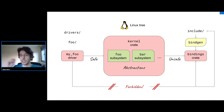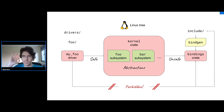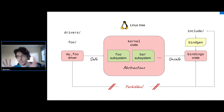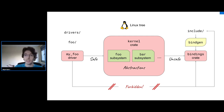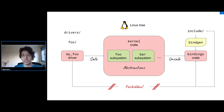Yes, bindgen works for most things for us. There are some cases needing opaque types, and a few that don't work, but very few. We don't need to write bindings manually for the most part. One known problem: bindgen uses libclang internally, not GCC. So if you build a GCC kernel with Rust support and bindgen parses headers with libclang, there can be differences if GCC uses a plugin that randomizes struct member ordering.